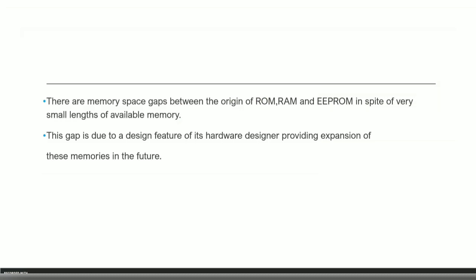You can also observe that there are gaps between the ROM, RAM, and EEPROM allocations in the memory map. These gaps represent free spaces between memory regions. The purpose of these gaps is to allow for future expansion — if the system design expands and the memory needs to grow, these spaces accommodate that. Even though the total memory is small, hardware engineers deliberately provide separation between memory regions to enable future memory expansion.